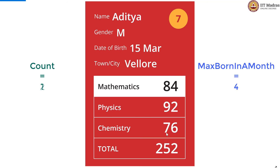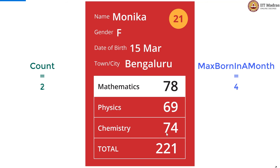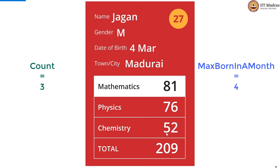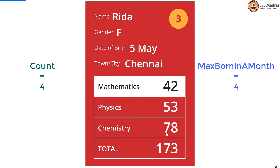Now count is 2, then 3, then 4, and the month changes. Max does not have to be updated because it is already at 4, and 4 is equal to 4.